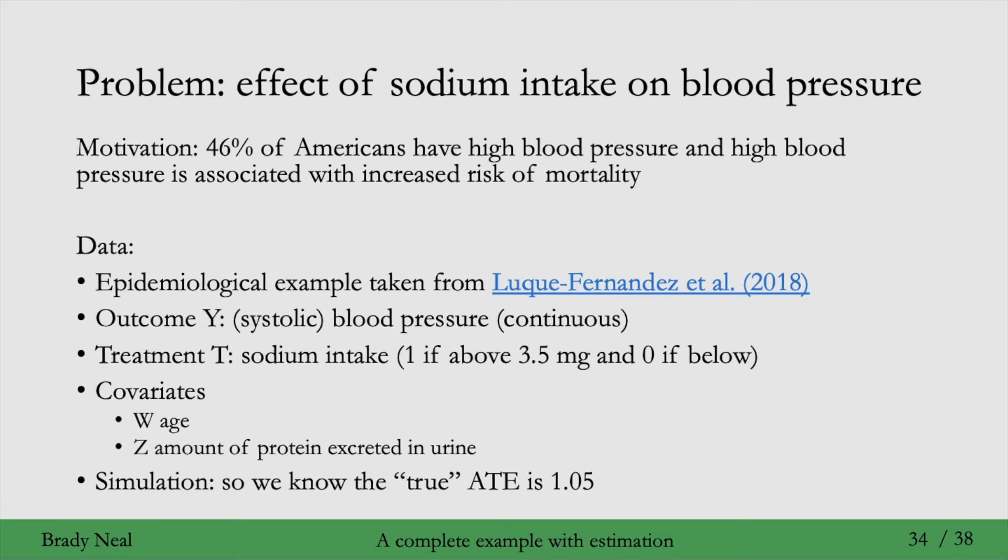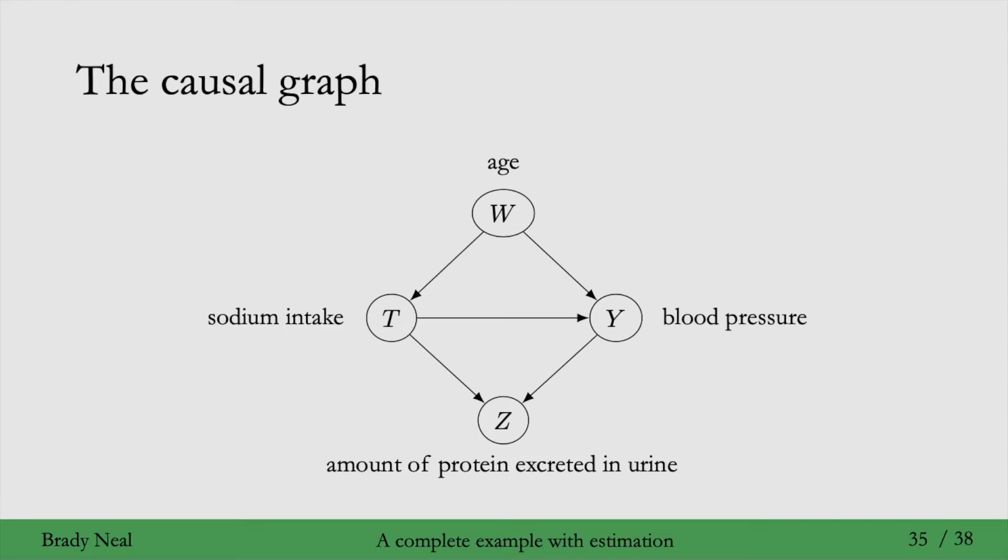Now that we've introduced the problem, the first thing to do, now that we're using causal graphs, is write down the causal graph. We have that age is a common cause of sodium intake and blood pressure, and that the amount of protein excreted in urine is actually a common effect of sodium intake and blood pressure. The fact that Z is a collider here is really important.